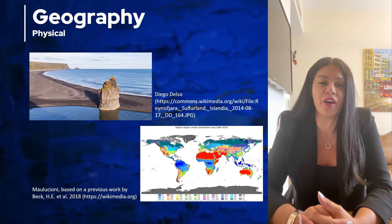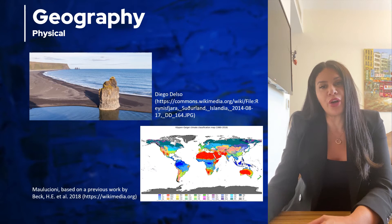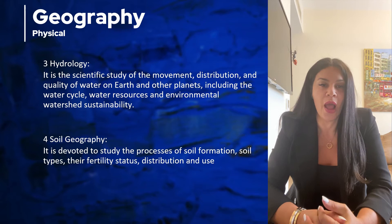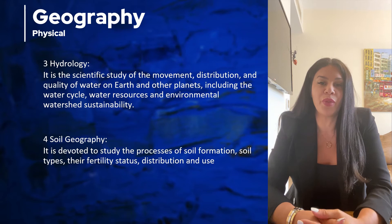Moving on to the next sub-branch of physical geography: hydrology. As the name says, hydro means water. It deals with the water forms — how rivers flow, how lakes function, how the seas or the oceans are formed.